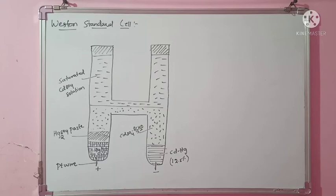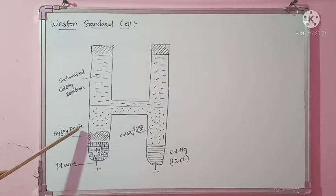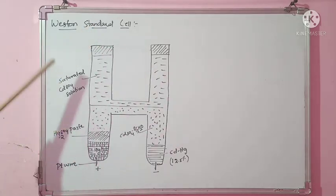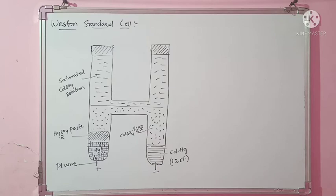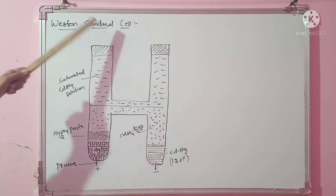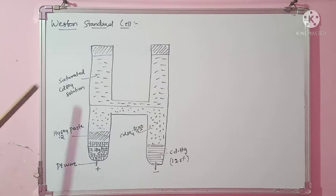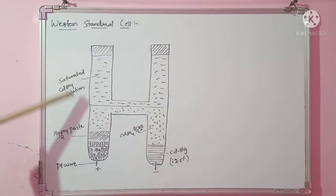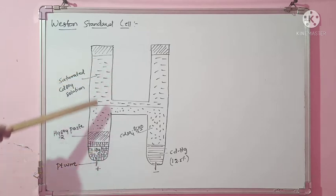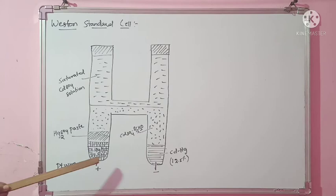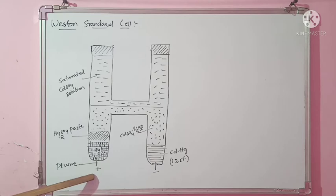Now let us understand in detail how the Weston standard cell is constructed. Here you can see the Weston standard cell. This cell satisfies the conditions of a standard cell. As you can see, it is in the form of an H shape — it looks like the letter H. One limb consists of mercury, which serves as the positive electrode.